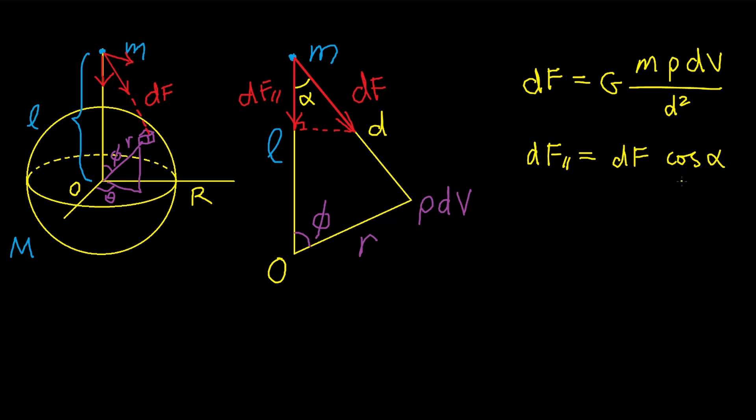dF parallel is just dF times cosine of α, due to orthogonal projection. By the law of cosine, d² equals L² + r² - 2Lr cos φ. And lastly, cos α is L - r cos φ divided by d.